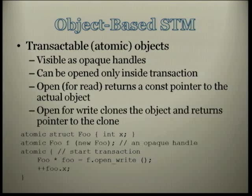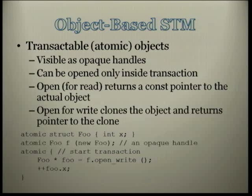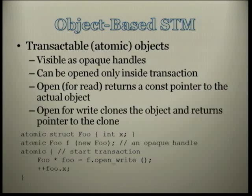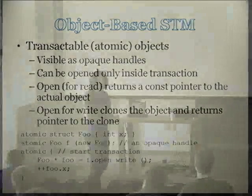There are two ways of opening an object: open for read — read-only access, which is faster and simpler — and open for write. Open for read gives you back a const pointer to your object. Open for write, on the other hand, clones the object — gives you a private copy. So an atomic object must be clonable and have value semantics. The system clones the object for you. Inside the transaction, you modify these shadow objects — the cloned ones. At the end of the atomic block, the commit puts these shadow objects back into memory.